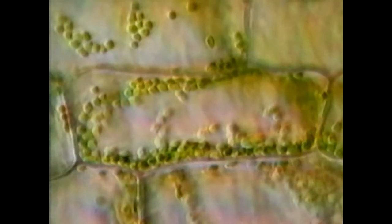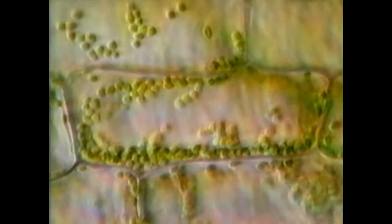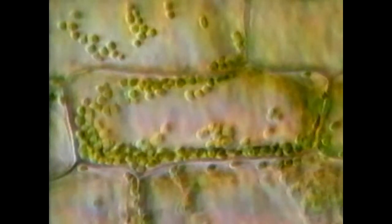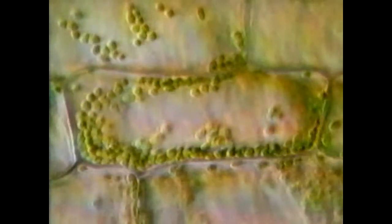In large plant cells, this motion, referred to as cytoplasmic streaming, is especially common. Here you see the cytoplasm moving around the cell in the space between the vacuole and the plasma membrane.